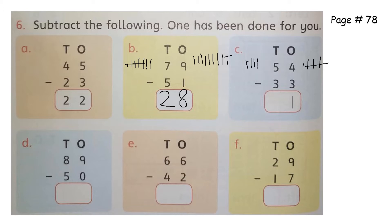How much is left? Two. Now we have to subtract zero from nine. When we subtract zero from any number, that number doesn't change, so we will write nine. If you draw nine lines and you have to cut zero lines, it will still come nine. Now you have to subtract five tens from eight tens.